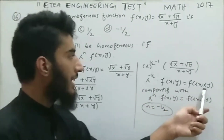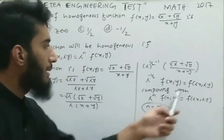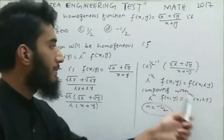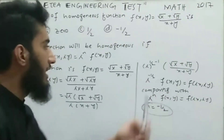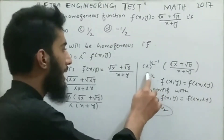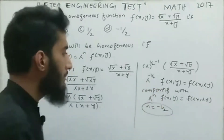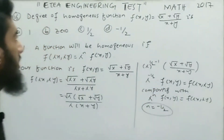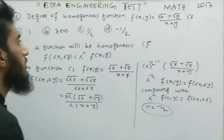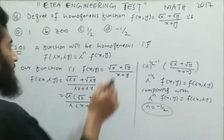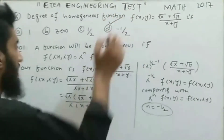Comparing with the standard form f(λx, λy) = λⁿ · f(x, y), the power of λ is −1/2. Hence the degree of the homogeneous function is −1/2, and the correct option for this MCQ is option number D.